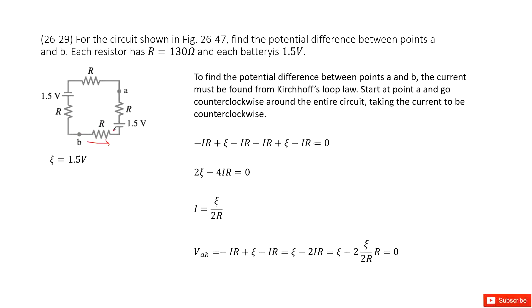The current goes through a resistor, so the voltage drops: negative IR. Then plus 1.5 volts, this epsilon. Then minus the current times R through the next resistor, minus IR. Then plus epsilon, the battery, and then minus I times R equals zero.